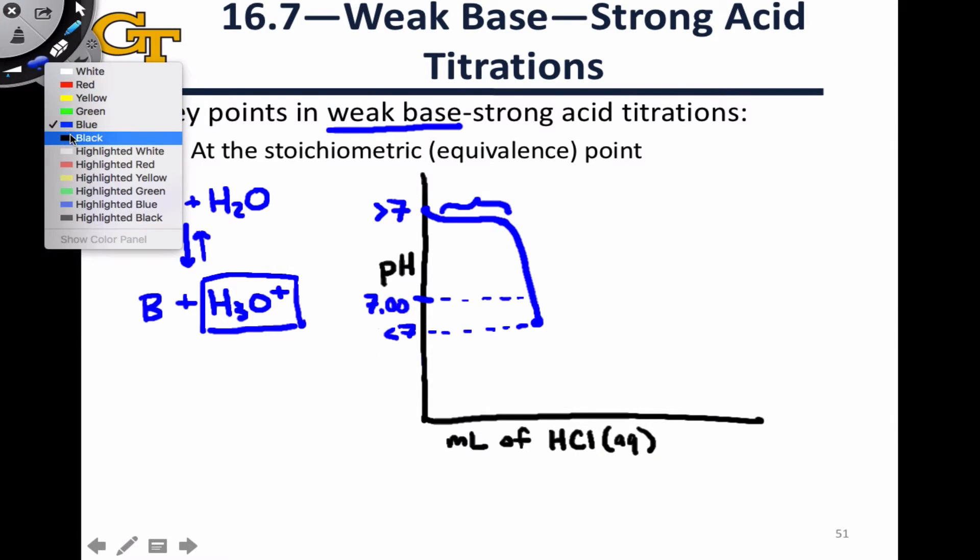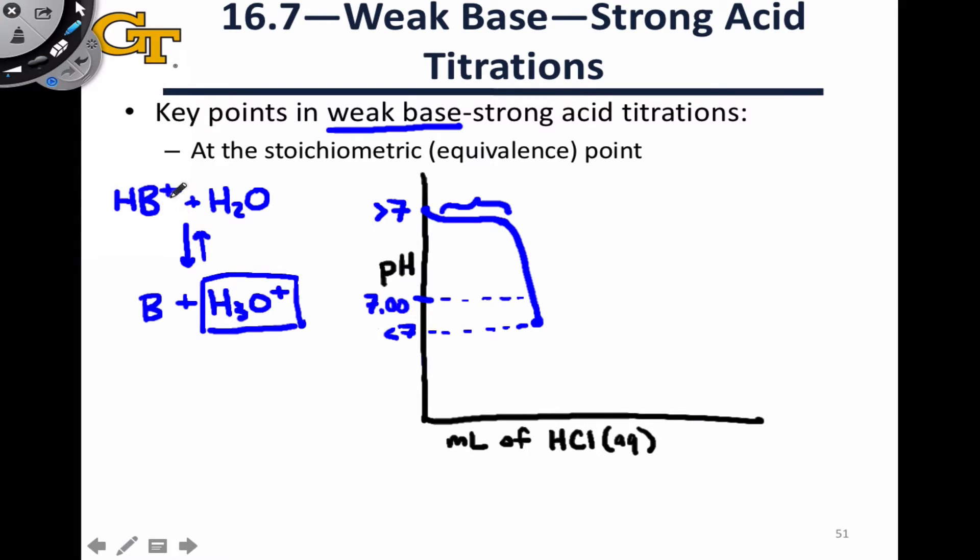Another way to think about this is that we've generated an acidic salt, HB+ Cl-, where Cl- comes from the titrant. After the titrant transfers a proton to B, we end up with this acidic salt, HB+ Cl-. The reaction of that salt with water generates hydronium and drives the pH down.